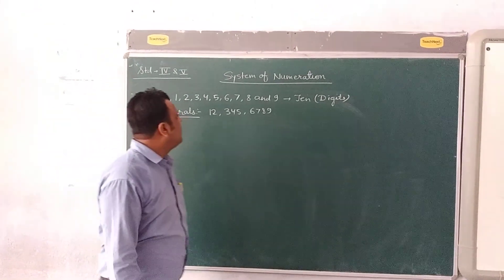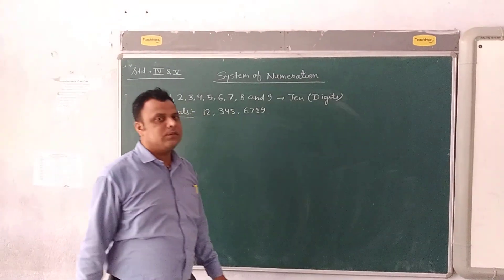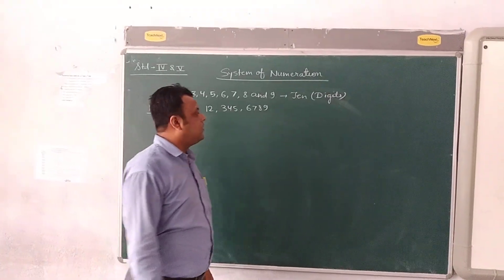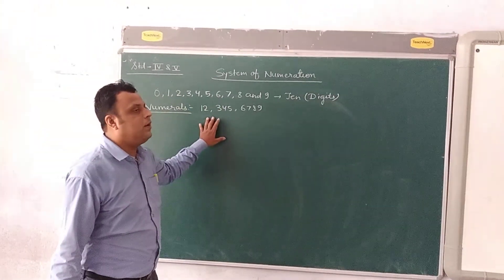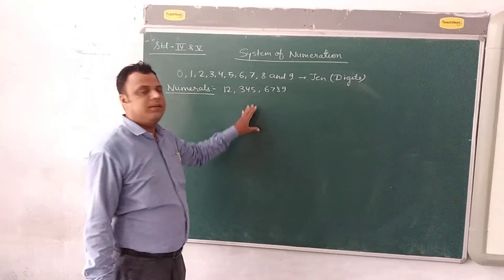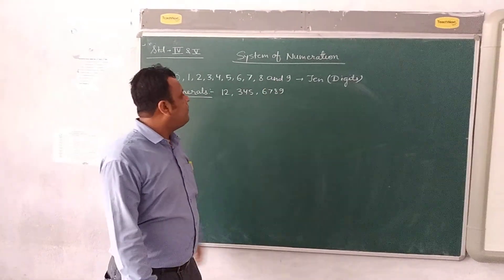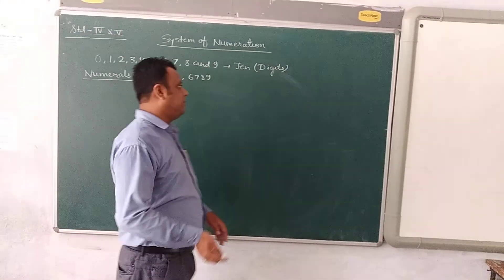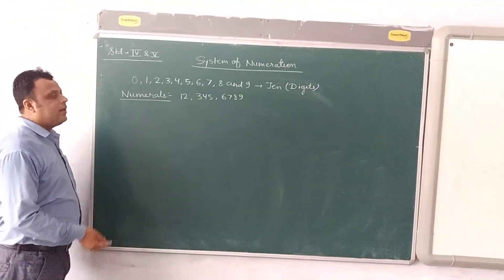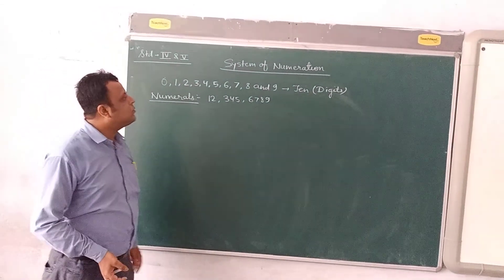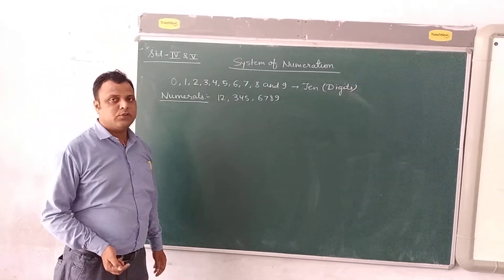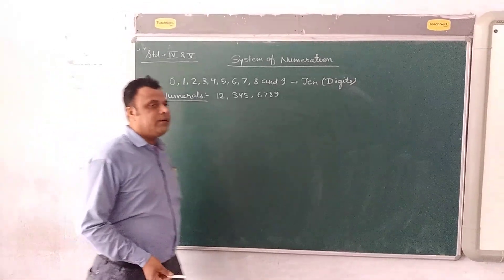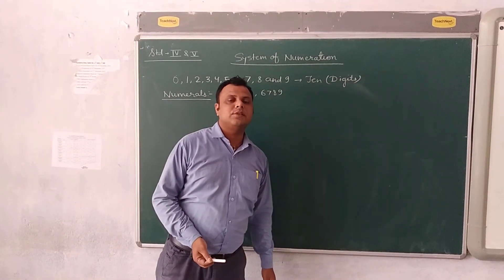Today we will learn how to write these numbers in words. These are in numeral form and we have to write them in words. The system by which we write any number in words is called the System of Numeration. There are two systems: the first one is Indian and the second one is International. Today I am going to discuss only the Indian System of Numeration.